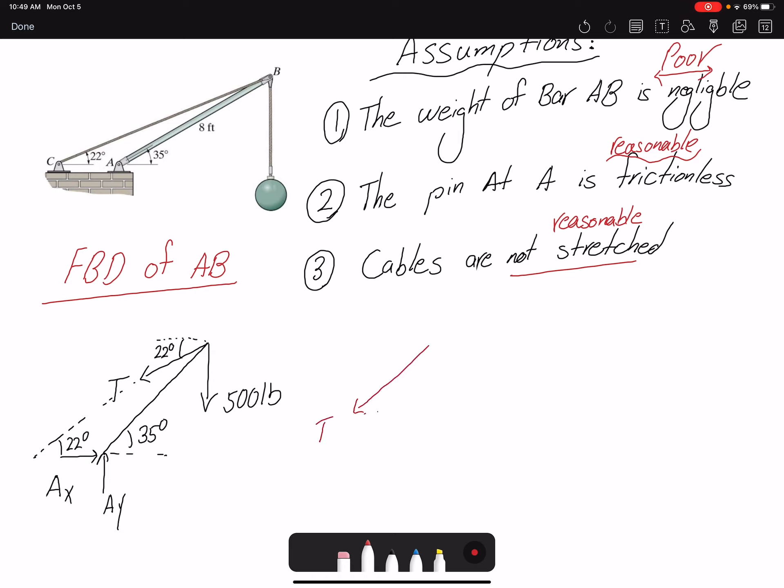So I need to decompose my tension T. I can either decompose it into the x and y components. I don't have a coordinate, so let me draw a coordinate here, x and y, and call it Ty and Tx. And I have the angle that would be 22 degrees, so I can find the components. And in that case both components are going to create a moment about point A.